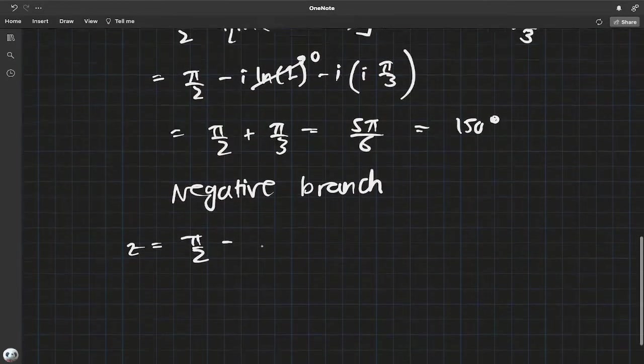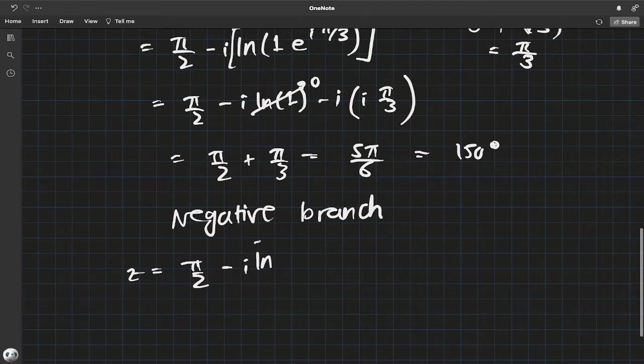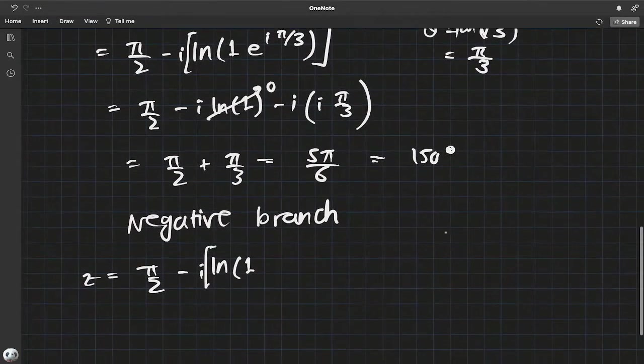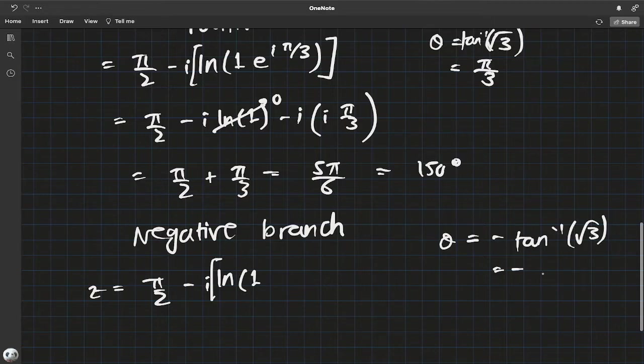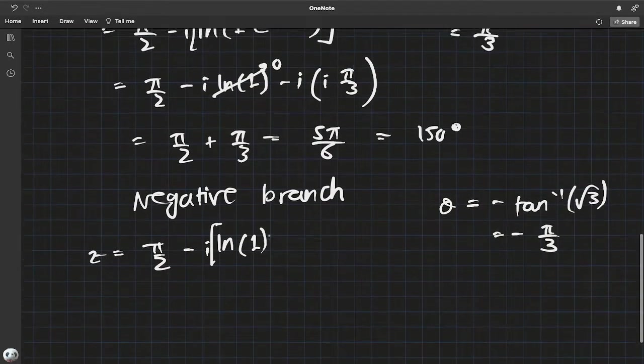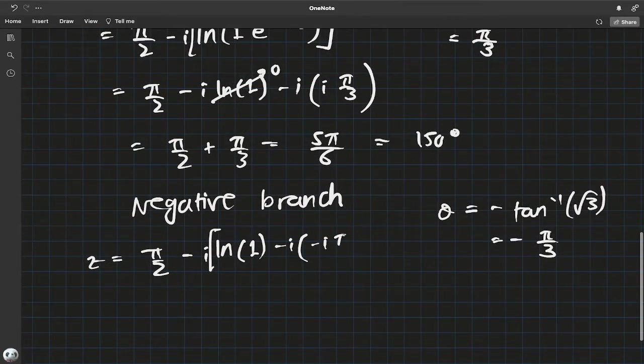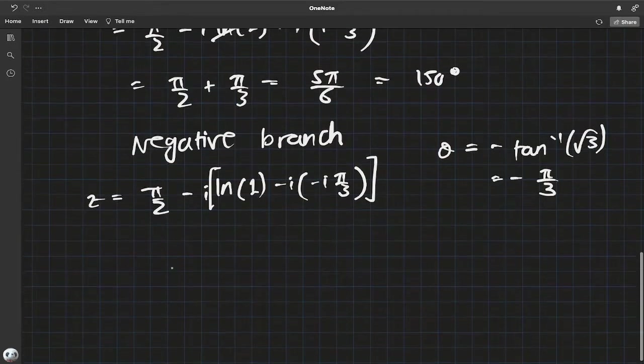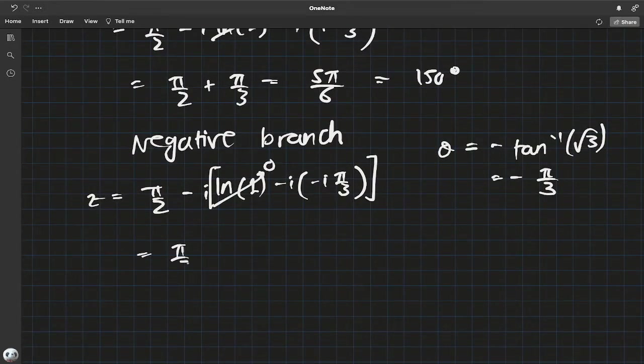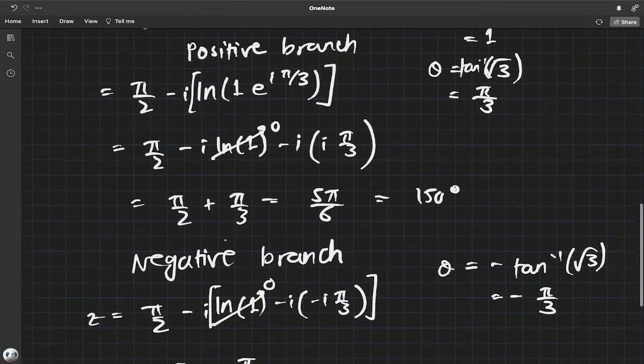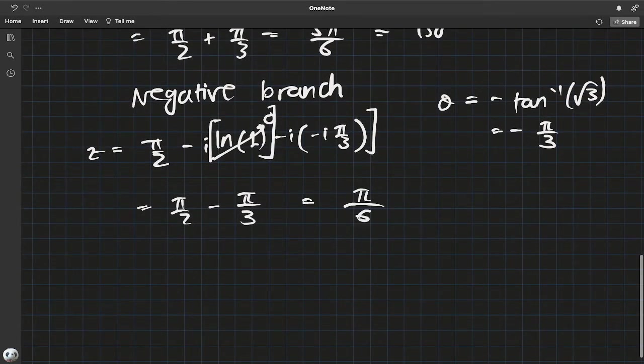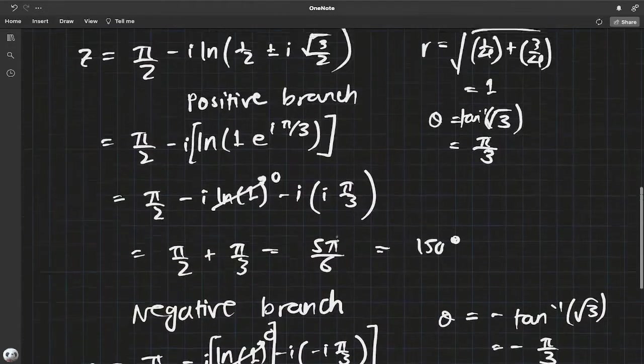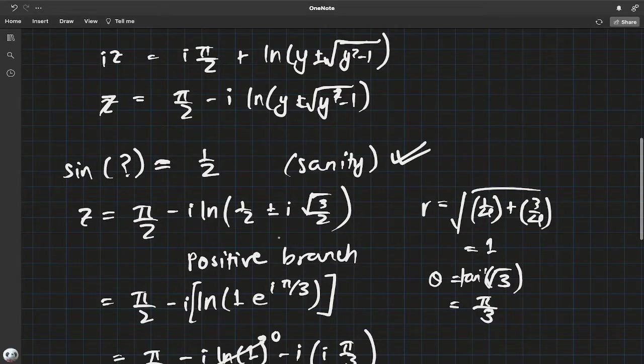Now let's look for the negative branch, which is π/2 minus i times, well, the radius remains one, but the angle this time is negative arctangent because it lies in the fourth quadrant. This gives minus iπ/3. This guy is zero. We get π/2 minus (-π/3), which is π/2 + π/3 = 5π/6... wait, π/2 - π/3 = π/6, which is 30°, and that is in the first quadrant. We've completed the sanity check. It really works.